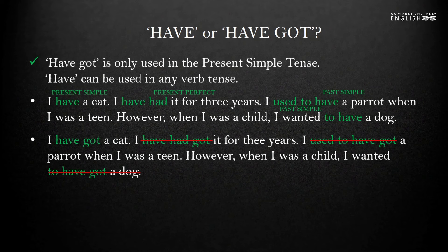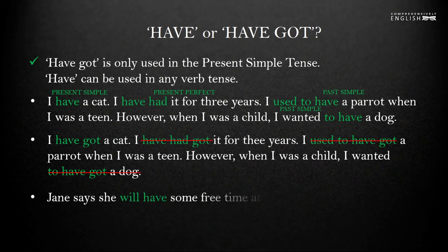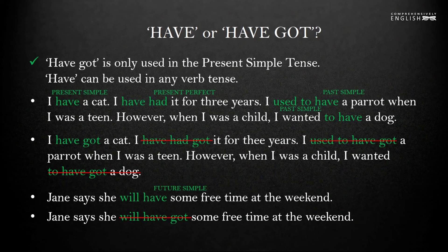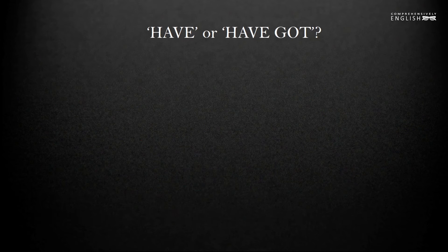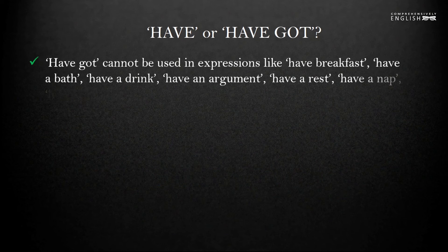In the future, have got is also impossible. So we can say 'Jane says she will have some free time on the weekend,' but we cannot say 'Jane says she will have got some free time' — that would be incorrect. The last difference is that have got cannot be used in expressions like have breakfast, have a bath, have a drink, have an argument, have a rest, have a nap, have a try, and so on and so forth.